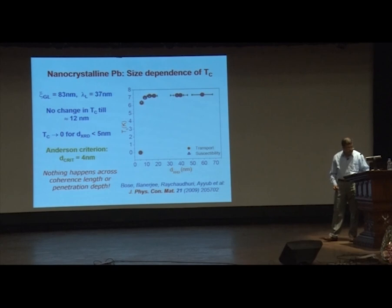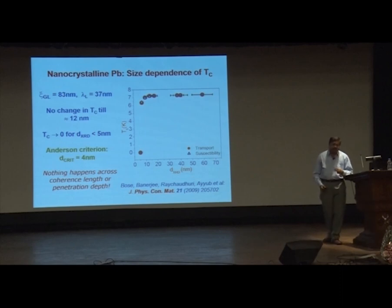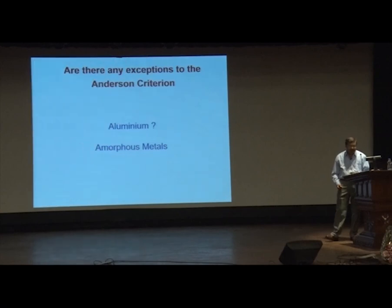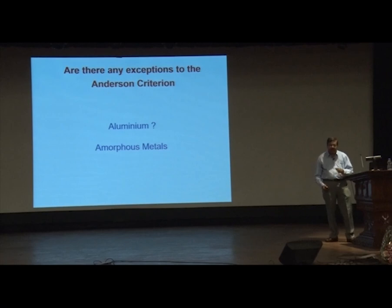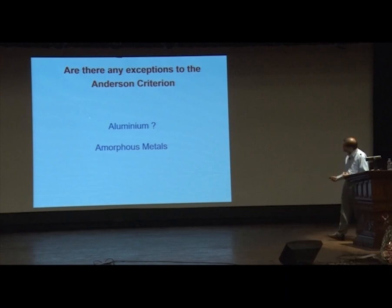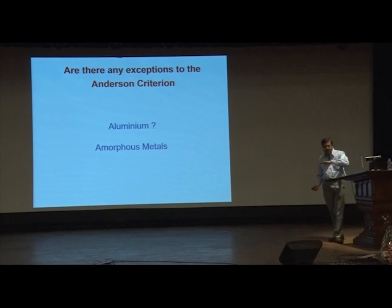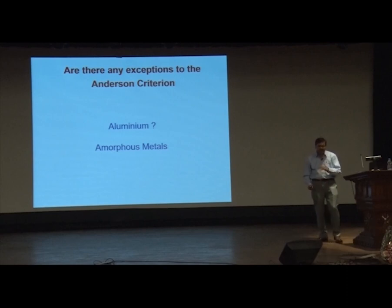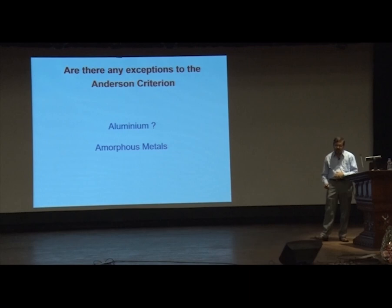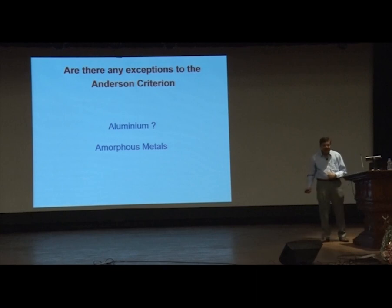The rest of my talk looks at what are the limits of the Anderson limit — is it really so robust? Are there exceptions to the Anderson criterion? Aluminum appeared to be an exception because the TC goes up, though later people agreed the TC does come down and becomes non-superconducting at some finite size. In amorphous metals like amorphous tantalum, it looks like TC remains even at quite low temperatures — another interesting effect.